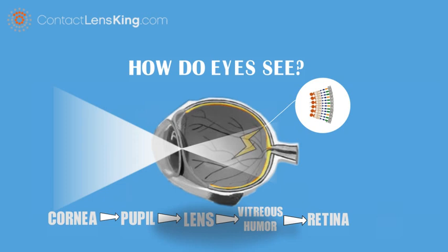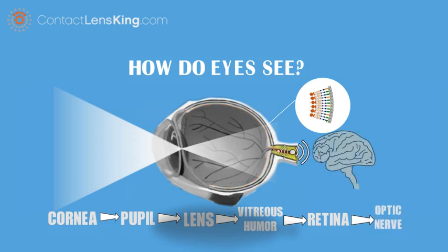The retina then converts the light stimuli into electrical nerve impulses and sends them to the optic nerve, located at the back of the eye. The optic nerve sends these signals to the brain, where they are finally converted into images.